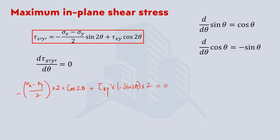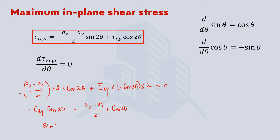Since this is negative, we can shift it to the other side and it becomes positive. So let's shift cos 2 theta to the other side. On the left-hand side we are left with tau xy times sine 2 theta. We can notice that 2 is common in both terms. Dividing through by 2, we are left with this term. When this term is shifted to the other side, it becomes positive.